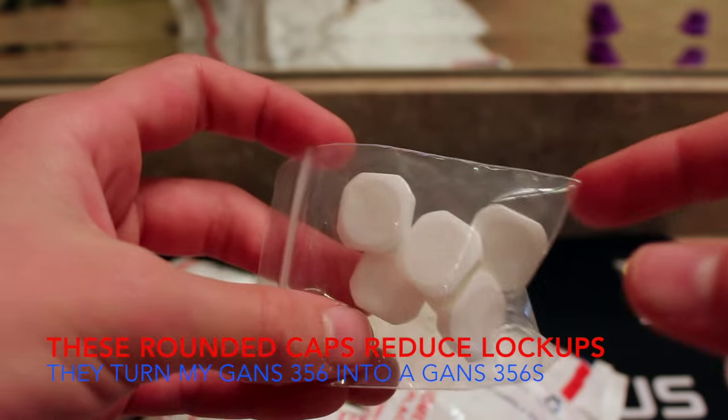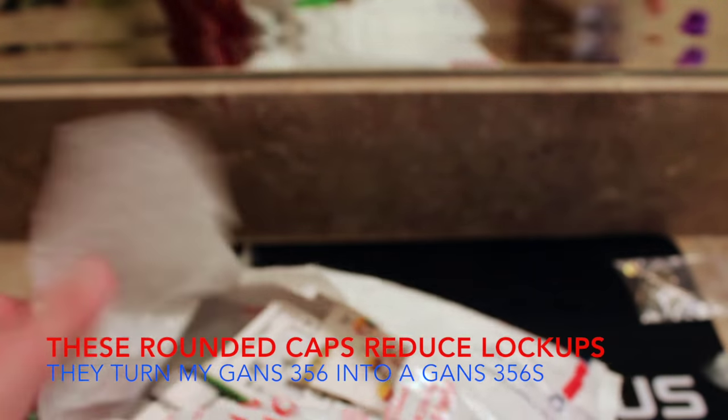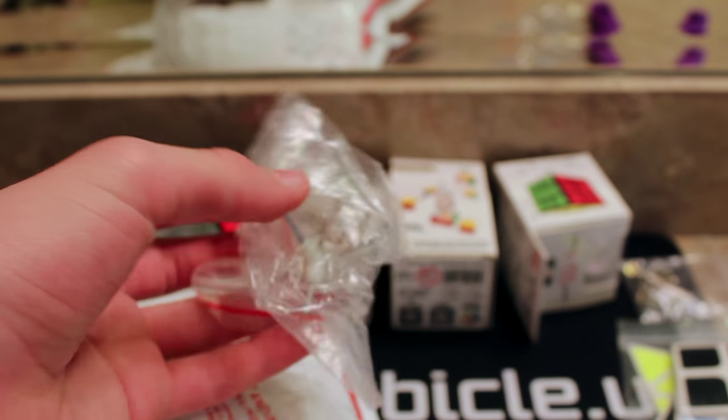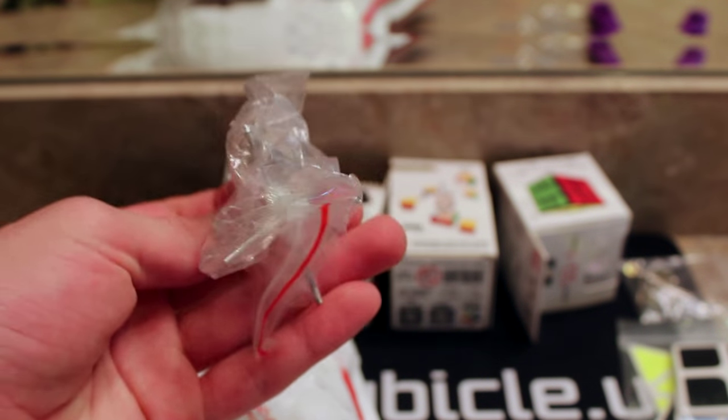These are center caps to make my Gans 356 better, which is awesome. Stickers for all the cubes that I ordered. And here we go. I believe that's it, other than the actual cubes. Oh, no it's not. Oh yeah, I got two cores actually because I didn't know which one would fit the Fankun.